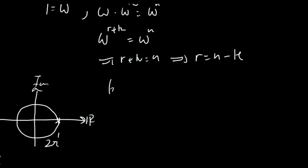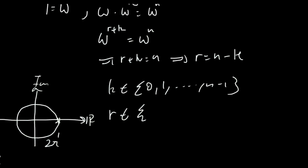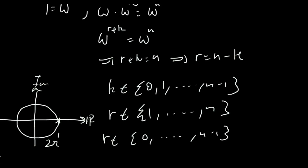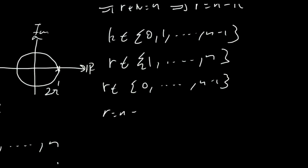We know that k is in the set {0, 1, ..., n minus 1}, so r will be in the set {1, ..., n}. But as we discussed earlier, this is essentially the same range as {0, 1, ..., n minus 1} — they produce the same roots. So r equals n minus k is certainly allowed. For each element omega to the k there exists an inverse omega to the n minus k. We've proved that this set under multiplication satisfies all four axioms of group theory, and therefore it must form a group.